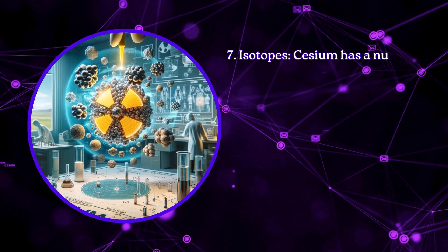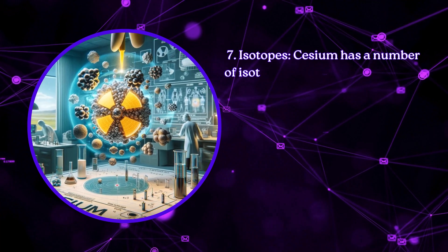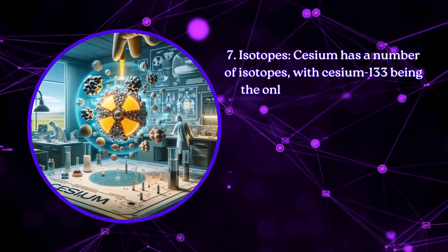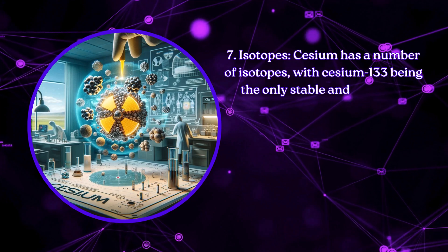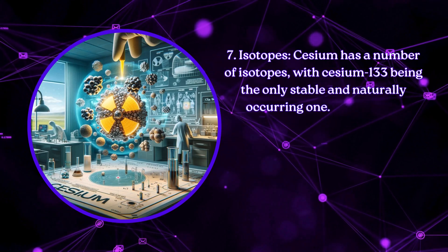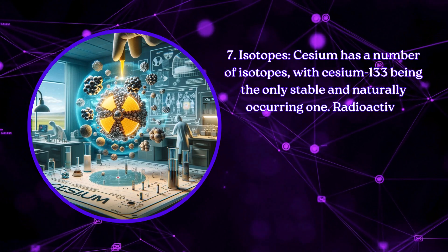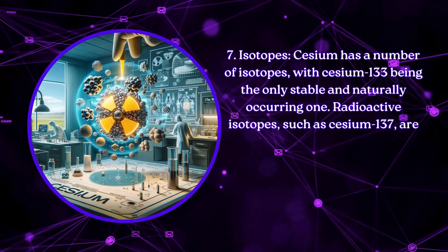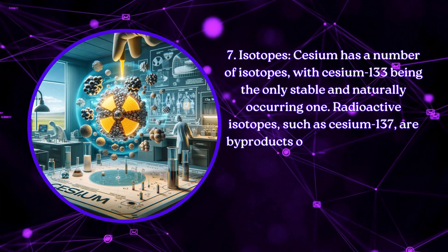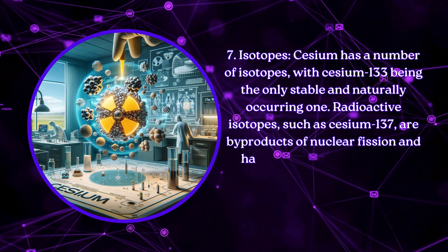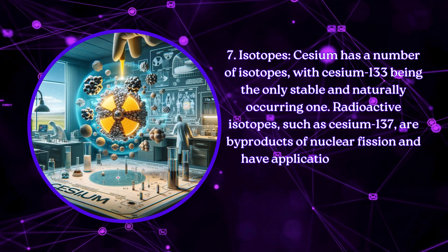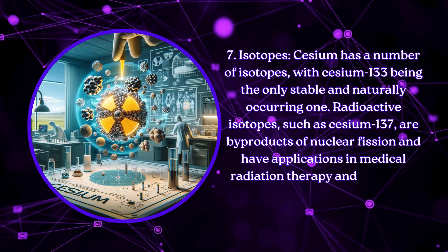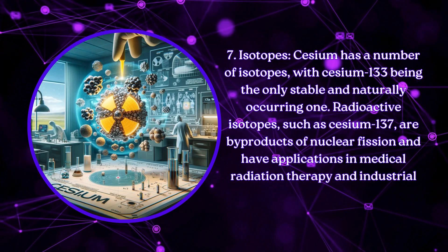Isotopes: Cesium has a number of isotopes, with cesium-133 being the only stable and naturally occurring one. Radioactive isotopes, such as cesium-137, are byproducts of nuclear fission and have applications in medical radiation therapy and industrial gauges.